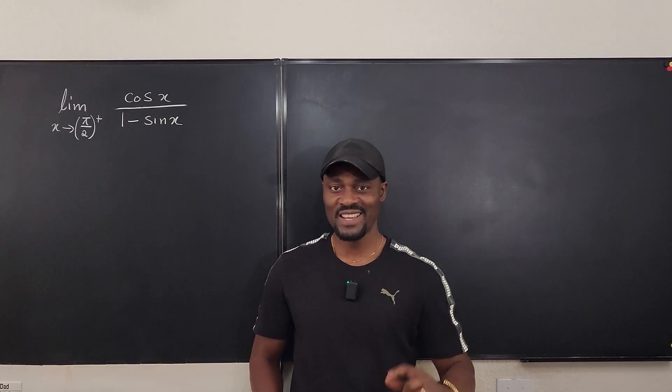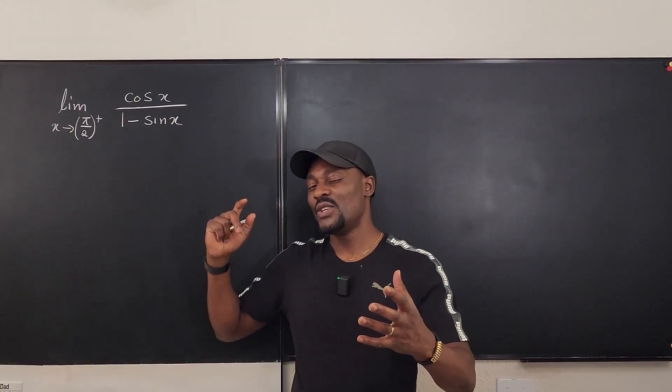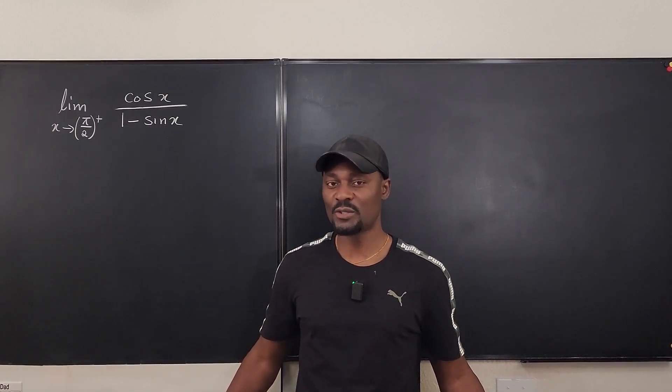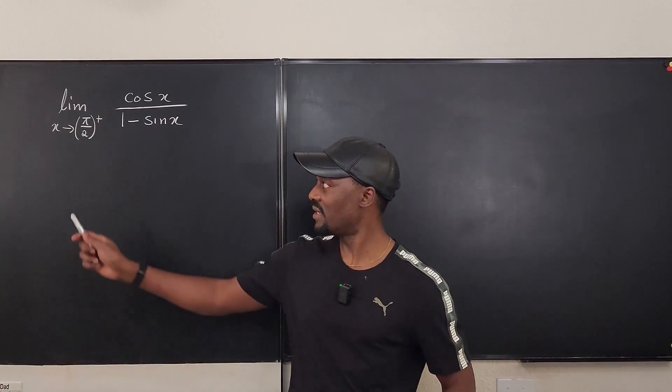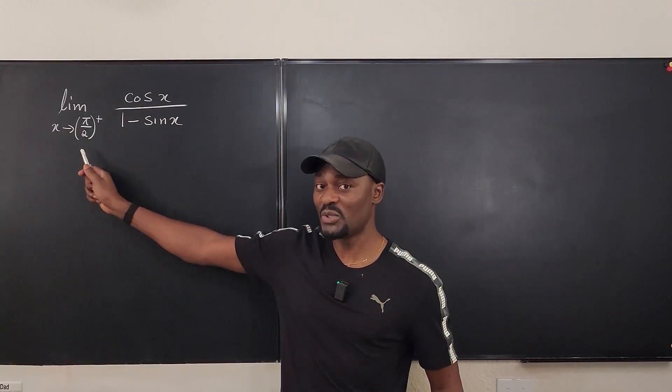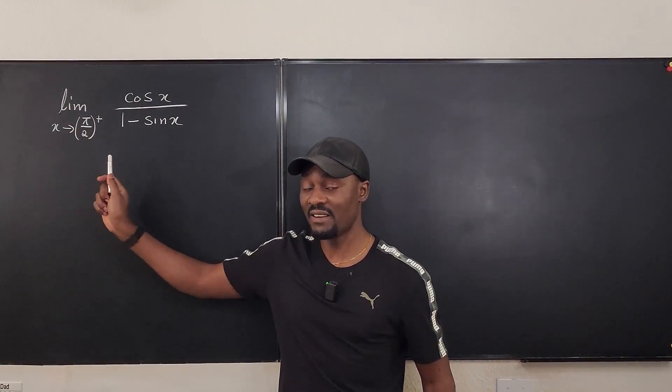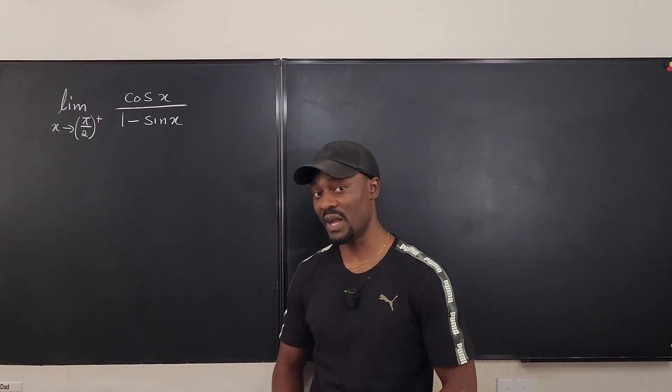Welcome to another video. This is one of those limit problems that you do all the work, you get to the end, you still get it wrong just because you ignored a tiny detail. If your teacher says x approaches pi over 2 from the right, they did that for a reason. So don't assume that from the right is not important. Let me show you why.